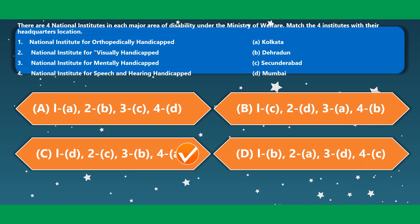There are four national institutes in each major area of disability under the Ministry of Welfare. Match the four institutes with their headquarters. National Institute for Orthopedically Handicapped is located in Mumbai. National Institute for Visually Handicapped is situated in Secunderabad. National Institute for Mentally Handicapped is located in Dehradun. National Institute for Speech and Hearing Handicapped is located in Kolkata. The correct option is option C.